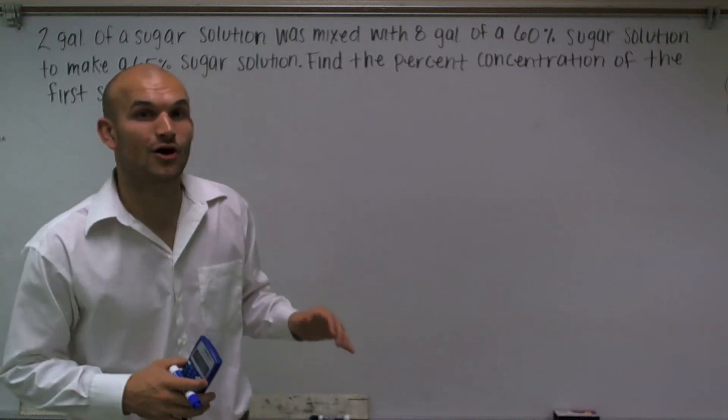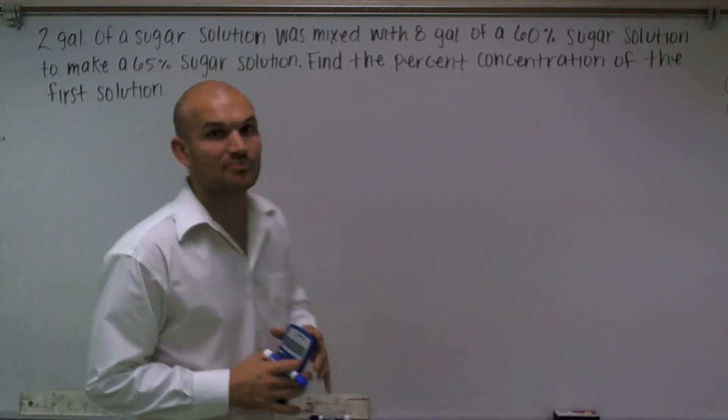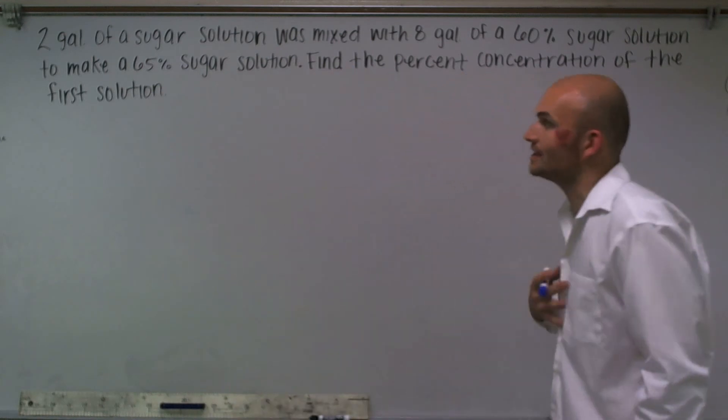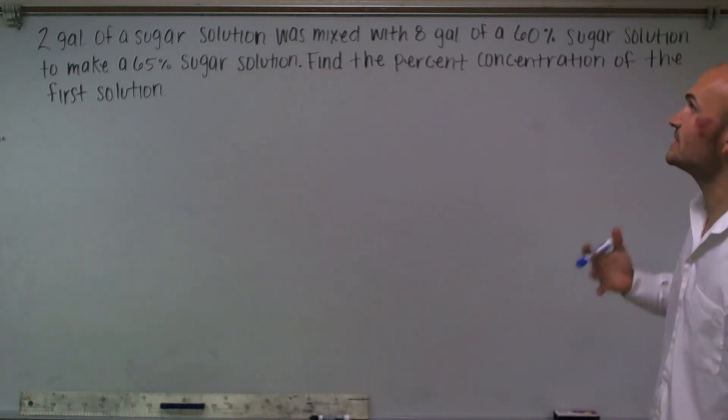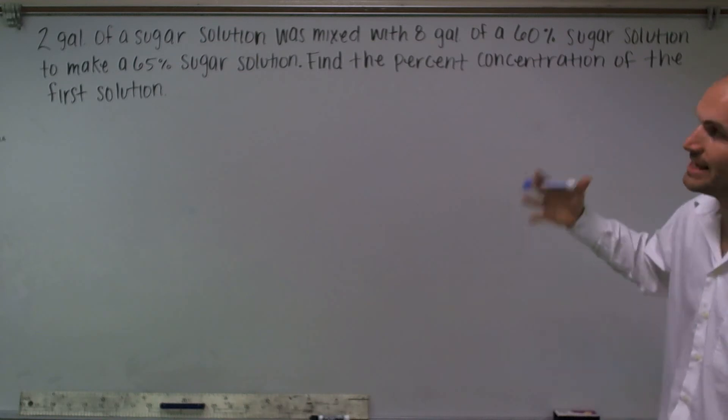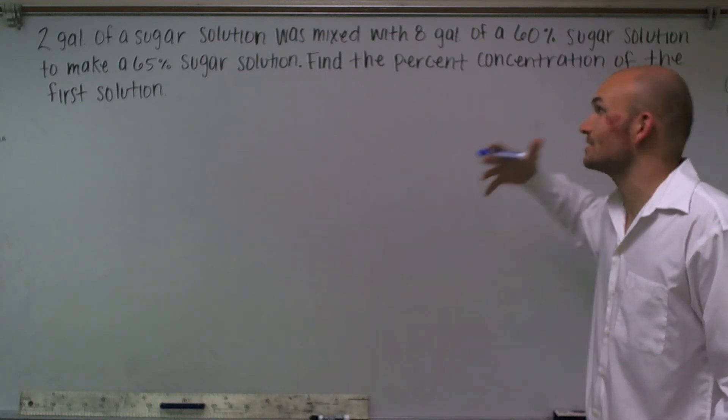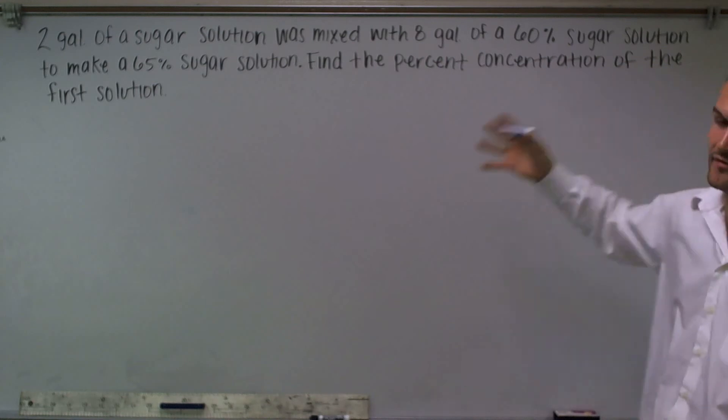Welcome. I want to show you how to solve this mixture problem. In this problem, it reads: two gallons of sugar solution was mixed with eight gallons of a 60% sugar solution to make a 65% sugar solution. Find the percent concentration of the first solution.